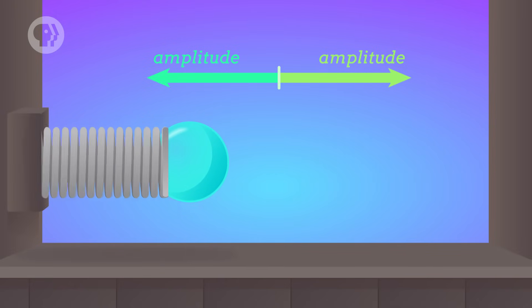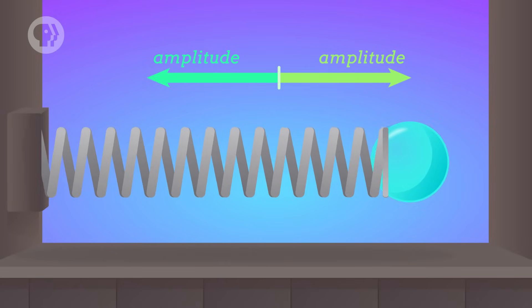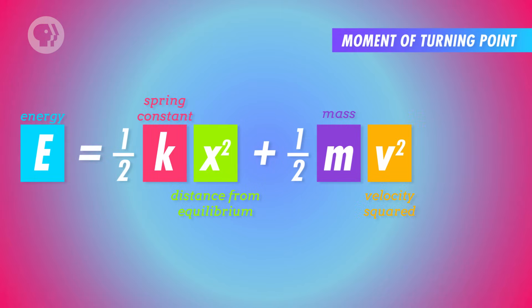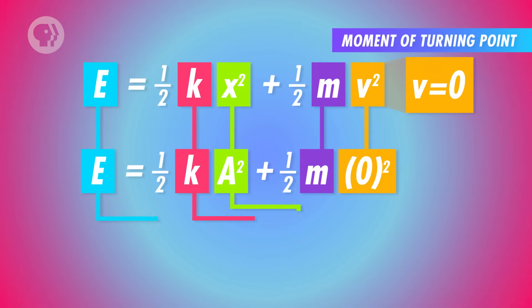At those two turning points, the ball won't have any kinetic energy, since it isn't moving. Instead, all of the ball's energy will be potential energy from the spring – half of the spring constant times the amplitude squared.